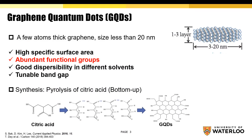Graphene quantum dots are a new zero-dimensional carbon material made up of a few atoms thick graphene. They contain abundant functional groups and are highly dispersible in various solvents, which makes them a potential inducing agent during the material synthesis process.